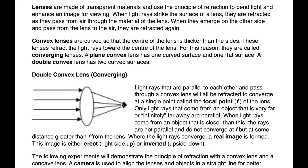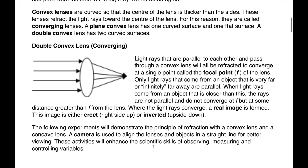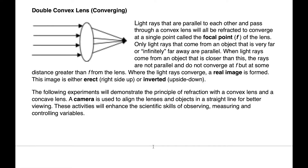The focal point is where the image is focused. Only light rays from an object that is very far — infinitely far — are always parallel. When light rays come from an object closer than this, the rays are not parallel and do not converge at the focal point but at some distance greater than the focal point from the lens. Where the light rays converge, a real image is formed, and the image is either erect — right side up — or inverted — upside down. For a distant object the image is going to be inverted.